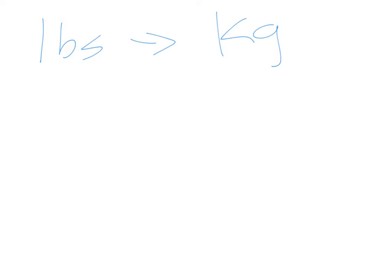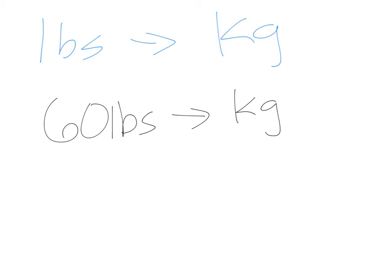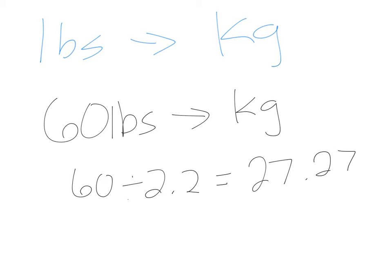Anytime, no matter what — say a patient is 60 pounds and I want to know what that is in kilograms — all I have to do is 60 divided by 2.2. That gives me about 27.27, or 27.3 if you round it, kilograms. That's what they weigh in kilograms, and this is going to come in handy when we get to dosages that require the patient's weight in kilograms.